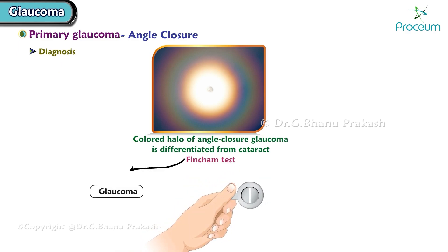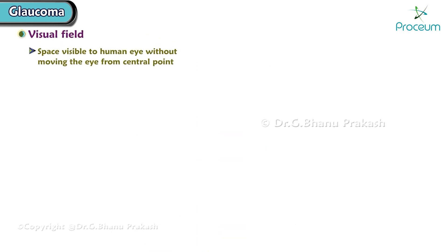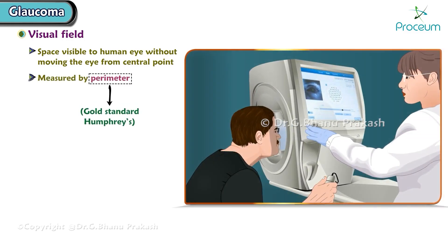In glaucoma, halos do not split upon being tested with the disc, whereas cataract halos split up and unite. Visual field is the space visible to the human eye without moving the eye from a central point. It is measured by a perimeter; the gold standard perimeter is Humphrey's perimeter.